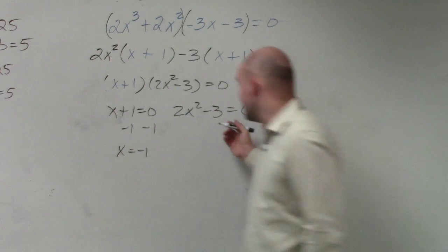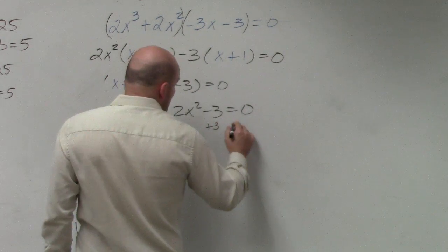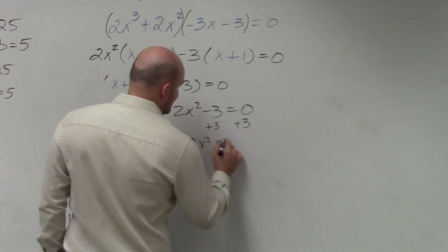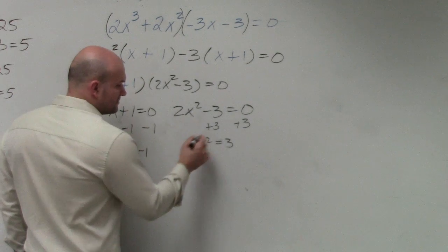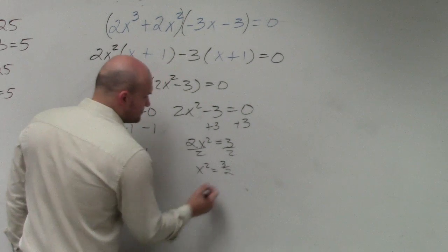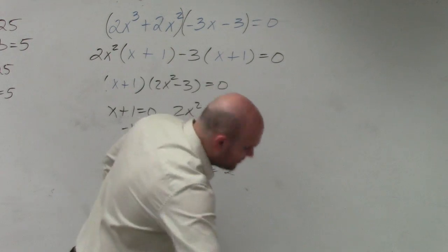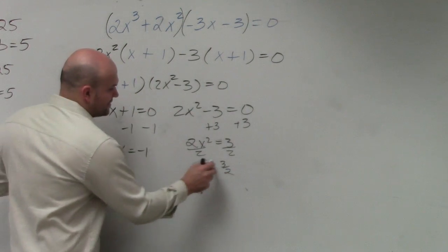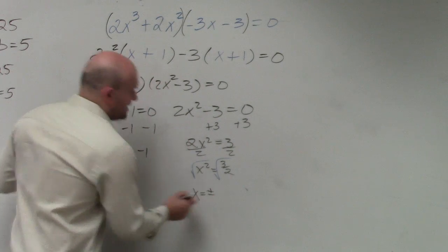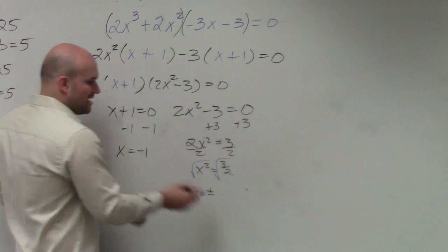That's what you'd have to do here. You would add 3, so 2x squared equals positive 3, divide by 2, x squared equals 3 halves. To get rid of the square, you take the square root, so x equals plus or minus.